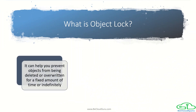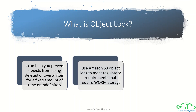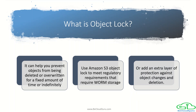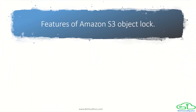Object Lock is a feature by which you can prevent overwriting or deletion of objects for various use cases, including regulatory and compliance issues. You can avoid deletion or overwriting for a fixed amount of time or indefinitely. You can use Amazon S3 Object Lock to meet regulatory requirements that require WORM storage — Write Once and Read Many. You can also use it to add an extra layer of protection against object changes and deletion.